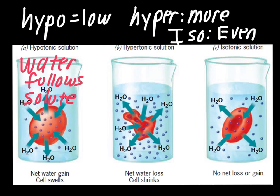Osmosis is a slightly more complex idea than some of the other topics we've covered, but you'll actually experience it in class with the egg lab. You'll see what happens when you take a cell and put it in different solutions overnight — it's going to react just like these individual red blood cells do in the different solutions shown here. Thank you for watching, and I'll see you in class.